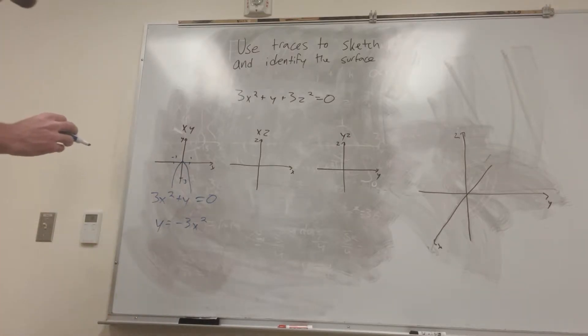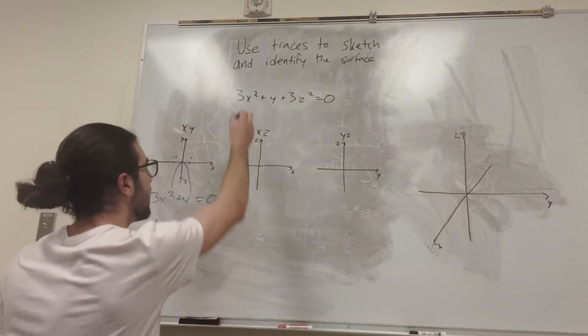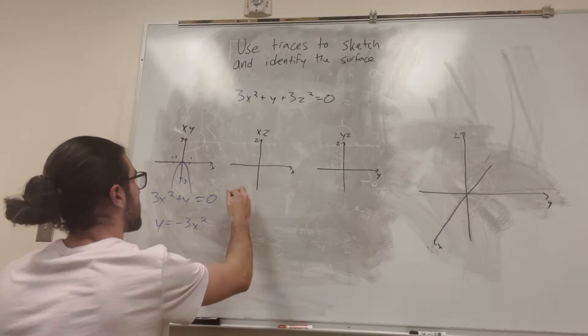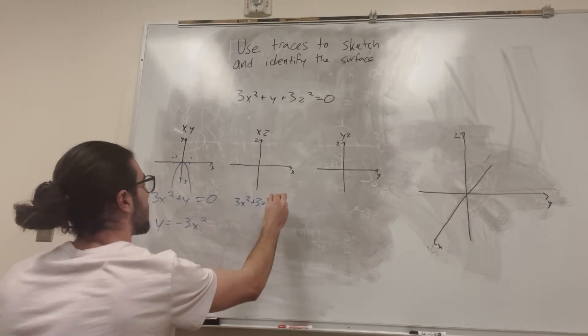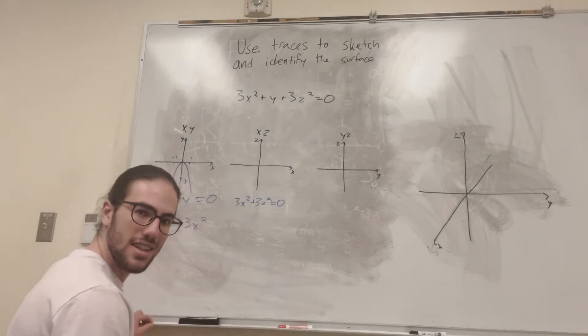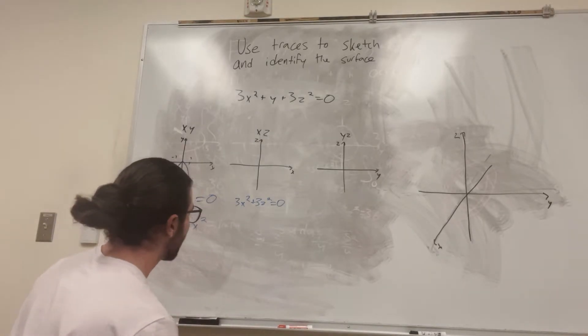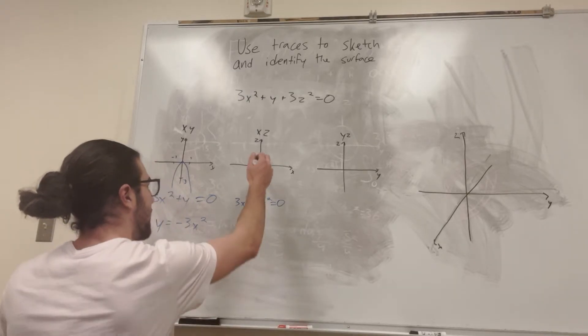So let's do the xz plane. So you're going to find that the xz plane is actually a circle. Let's see that. So to do the xz plane, you said y is equal to zero. So 3x squared plus 3z squared is equal to zero. But wait a second. That's not right, right? This is never going to have a function. This is never going to mean anything. It's just going to be a dot at the center.